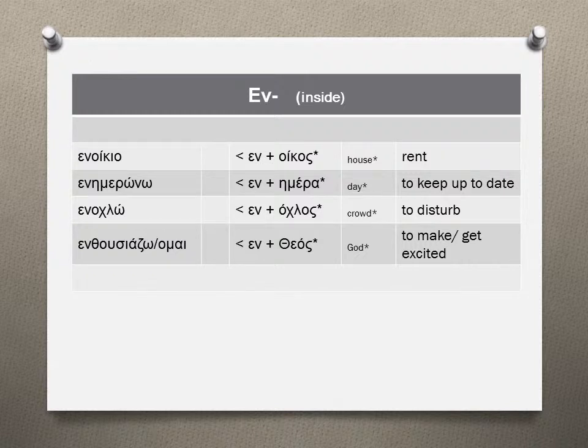We'll be starting with the prefix EN, that stands for INSIDE. There is fat chance someone renting a house in Greece is not familiar with the word ENIKIO. ENIKIO is the noun of the verb ENIKIAZO or NIKIAZO, and means THE RENT.